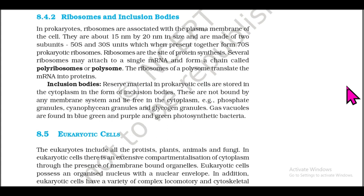Section 8.4.2: Ribosomes and Inclusion Bodies in Prokaryotes. Ribosomes are associated with the plasma membrane of the cell. They are about 15 nm by 20 nm in size and are made of two subunits — 50S and 30S — which when present together form 70S prokaryotic ribosomes. Ribosomes are the site of protein synthesis. Several ribosomes may attach to a single mRNA to form a chain called polyribosomes or polysome, which translate the mRNA into proteins.